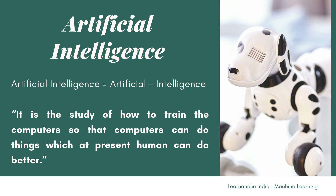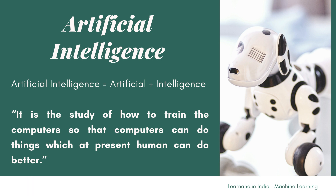Let's start with the Overview of Artificial Intelligence. The word Artificial Intelligence comprises two words: Artificial and Intelligence. Artificial refers to something which is made by humans or a non-natural thing, and Intelligence means the ability to understand or think. There is a misconception that Artificial Intelligence is a system, but it is not a system.